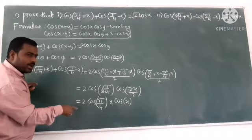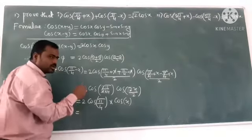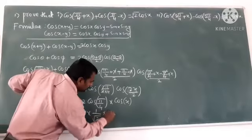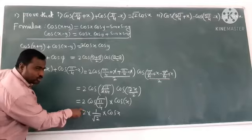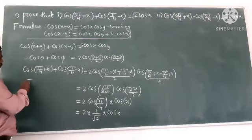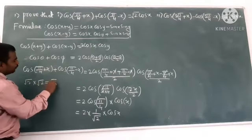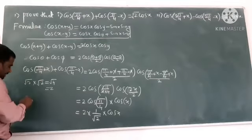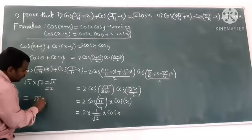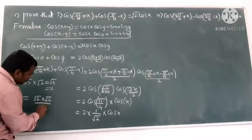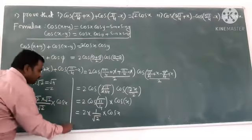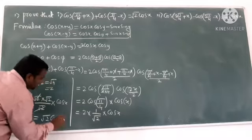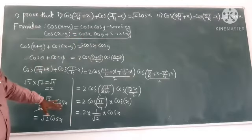1/√2. So here, 2 into 1/√2 into cos x. √2 into √2 is √4. √4 means 2, so 2 now cancelled. √2 cos x. So √2cos x, we have proved that. Clear?